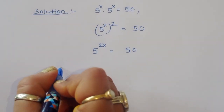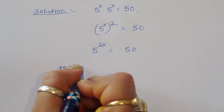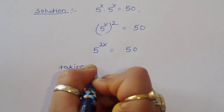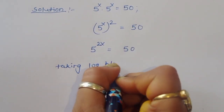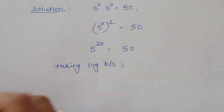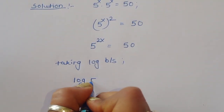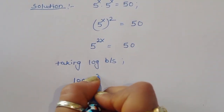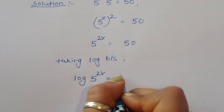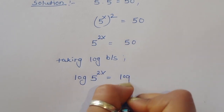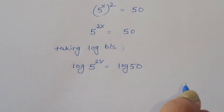We can take log here. Taking log on both sides, we will get log of 5^(2x) is equal to log of 50.